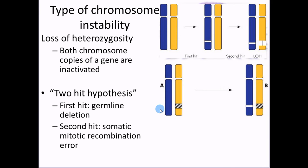Loss of heterozygosity means you're originally heterozygous — the same gene on both chromosomes but with two different alleles. If you're missing one gene and have only one allele, that's also considered heterozygous. But if you smoke too many cigarettes and suddenly lose that chromosome or that part of that chromosome, you don't have that gene at all — not a bad, flawed one, no gene at all.